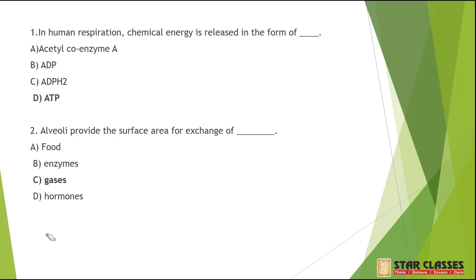The very first MCQ is: In human respiration, chemical energy is released in the form of — the straightforward answer is D, ATP.